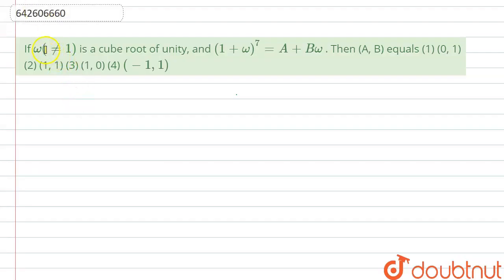Hello, let's start the question. The question says if omega not equal to 1 is a cube root of unity and 1 plus omega power 7 is equals to A plus B omega, then AB equals, and we have been given 4 options.